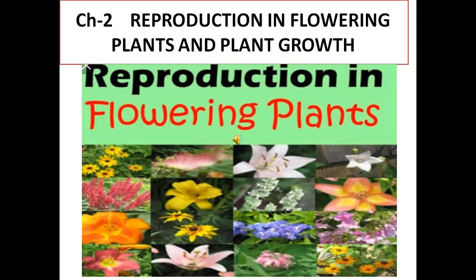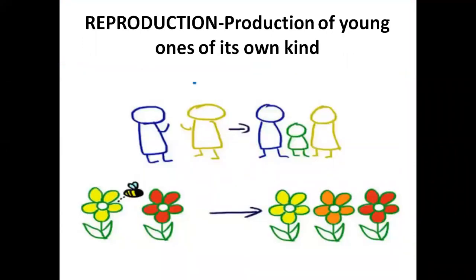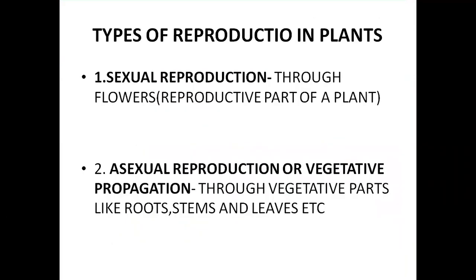Let's elaborate this with the help of a chapter of your science book: Reproduction in Flowering Plants and Plant Growth, Chapter 2. Reproduction in plants means the growing of new plants from the old ones. Like all other living things, plants too increase their number through reproduction. Plants produce young ones like themselves during their lifetime so that their species may not die out. Different plants adopt different methods of reproduction.